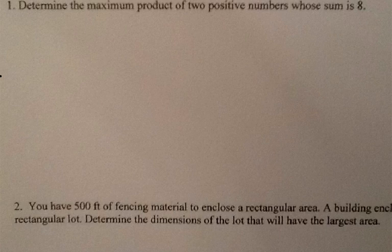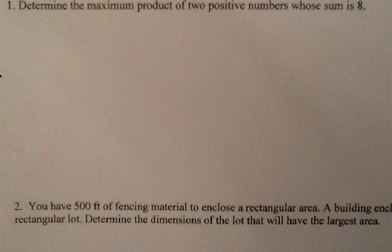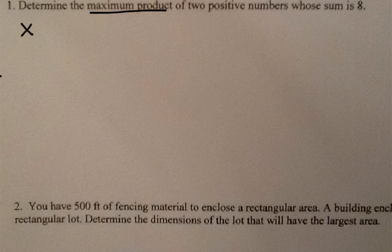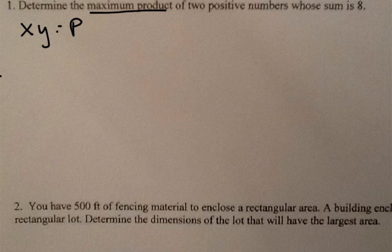For example, problem one: we are to determine the maximum product of two positive numbers whose sum is eight. This is a relatively easy problem. The first thing we need to do is find a formula for the quantity to be maximized — the product. We need a formula for the product in terms of two variables, so that would be x times y equals p, where x and y are the two positive numbers and p is the product. But this is in terms of three variables, so we need to get it in terms of only two.